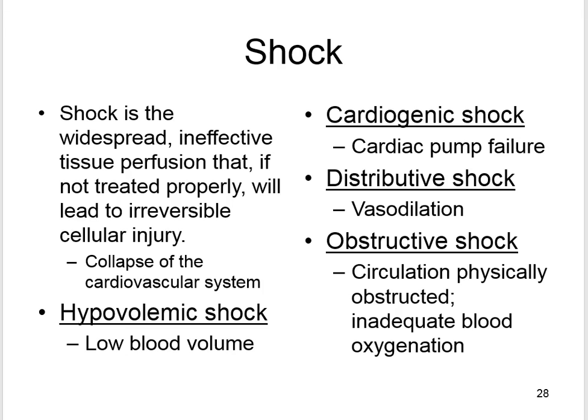Shock is widespread ineffective tissue perfusion that, if not treated properly, will lead to irreversible cellular injury — it's a collapse of the cardiovascular system with insufficient blood flow throughout the body. Cardiac output is the amount of blood pumped into the aorta each minute; stroke volume is the amount of blood ejected from a ventricle with each heartbeat. Hypovolemic shock is low blood volume, usually due to hemorrhage or fluid loss. Cardiogenic shock is cardiac pump failure, caused by arrhythmias, acute myocardial infarction, cardiomyopathy, or pericarditis.